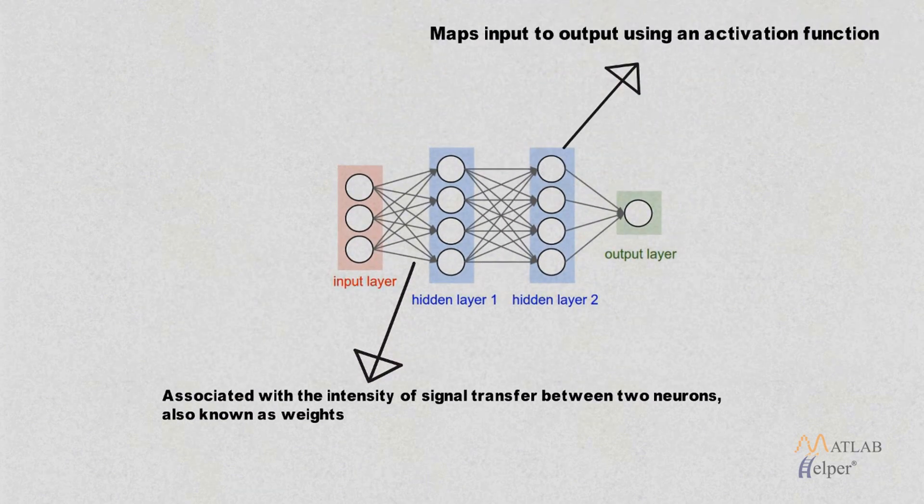Each neuron consists of an activation function which is used for mapping the input to output. Generally the activation function is a sigmoid function.